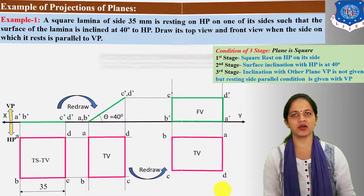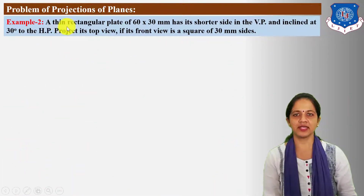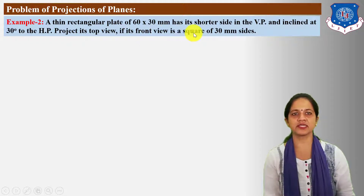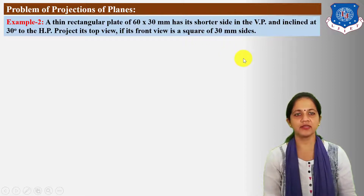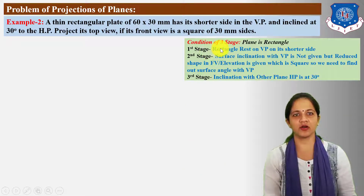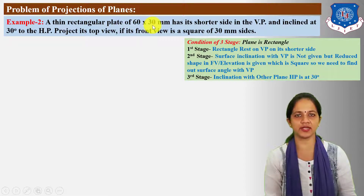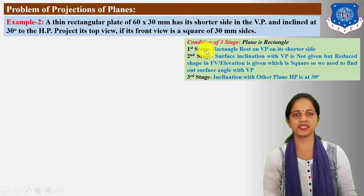Next, let us solve the second example. A thin rectangular plate of 60 x 30 mm has its shorter side in the VP and inclined at 30 degrees to the HP. Project its top view if its front view is a square of 30 mm sides. As per the given data, first list out the conditions for the three stages. The plate is a rectangle of size 60 x 30 mm.